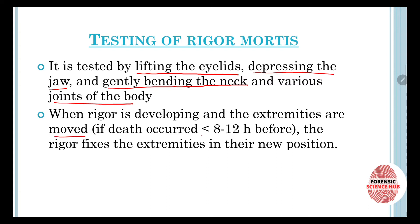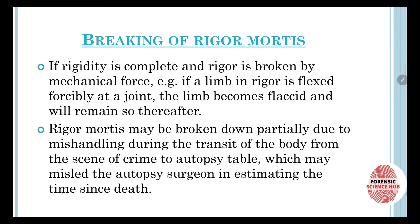When rigor mortis is still developing — which is the case if death occurred less than eight to twelve hours ago — and the extremities are moved during this period, the rigor fixes in the new position. For example, if the legs were in one position but the body was moved to another position while rigor mortis was still developing, the body will become stiff and rigid in that new position.